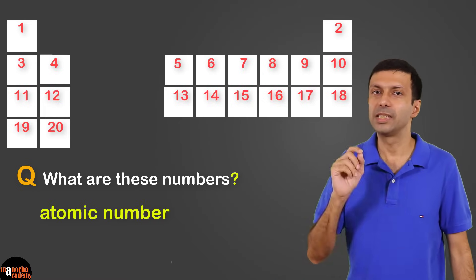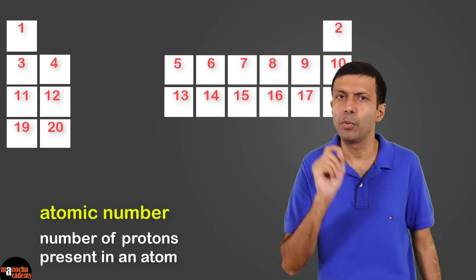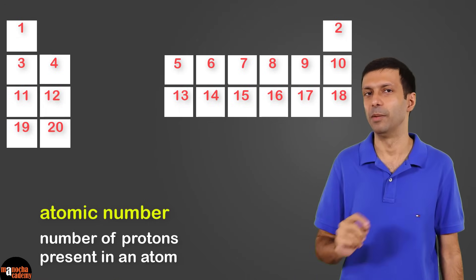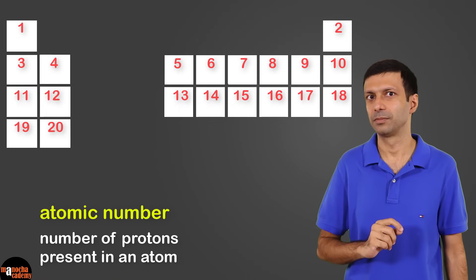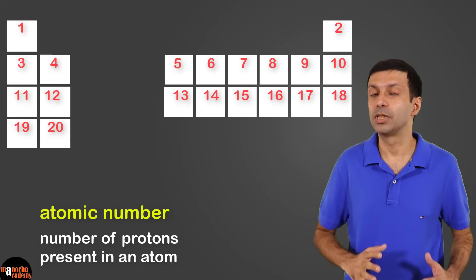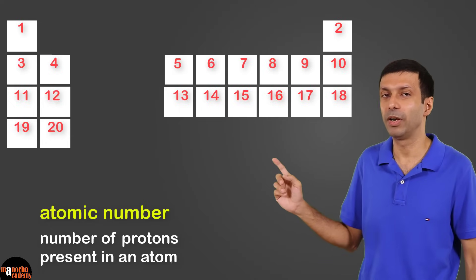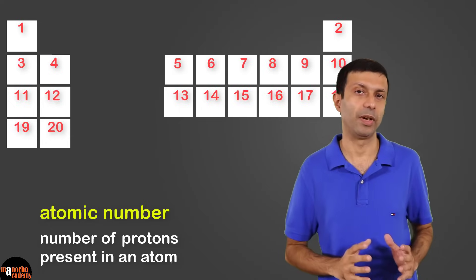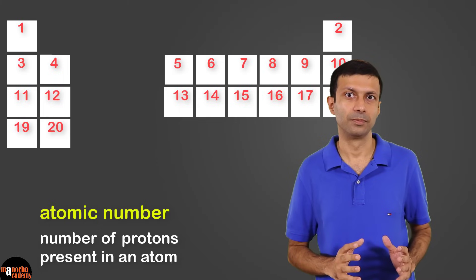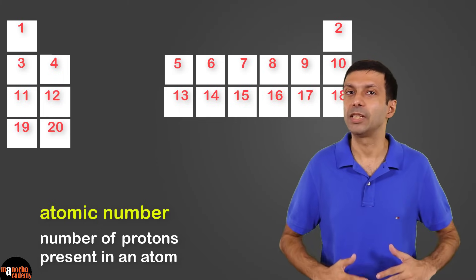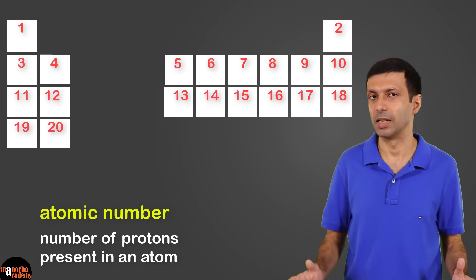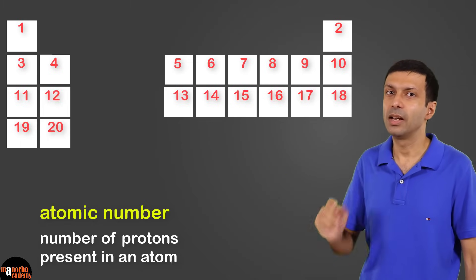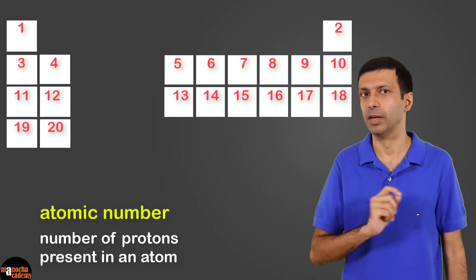Atomic number is defined as the number of protons present in the nucleus of an element. This was the major difference between the modern periodic table and Mendeleev's periodic table. Mendeleev's table was based on atomic mass, but the modern table is based on atomic number.